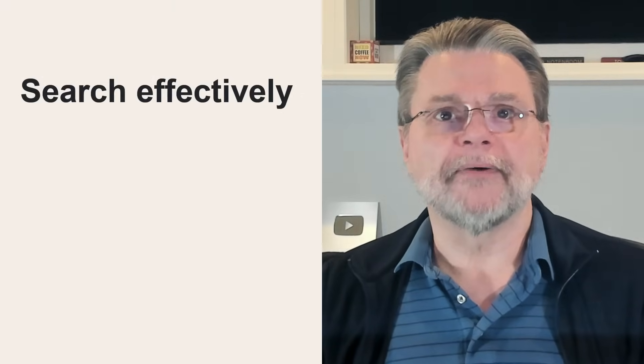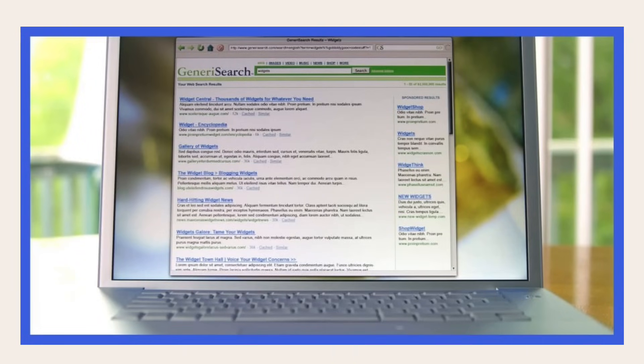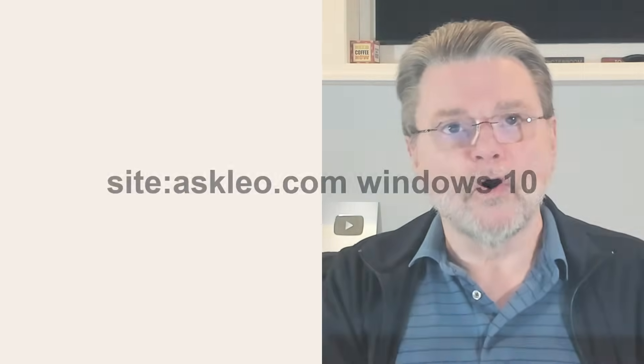Sometimes the search options offered by the various websites we encounter are less than ideal. Not to worry. There are techniques you can use to search even the specific resources I've mentioned using general purpose tools like Google and other search engines. Sometimes, though not always, the general purpose tools are more effective than the search provided by the sites themselves. For example, using Google to search for site colon askleo.com space windows space 10. That causes Google to return results only from askleo.com. Sometimes searching Microsoft.com using Google will return different results than the Microsoft website's own native Bing-powered search.